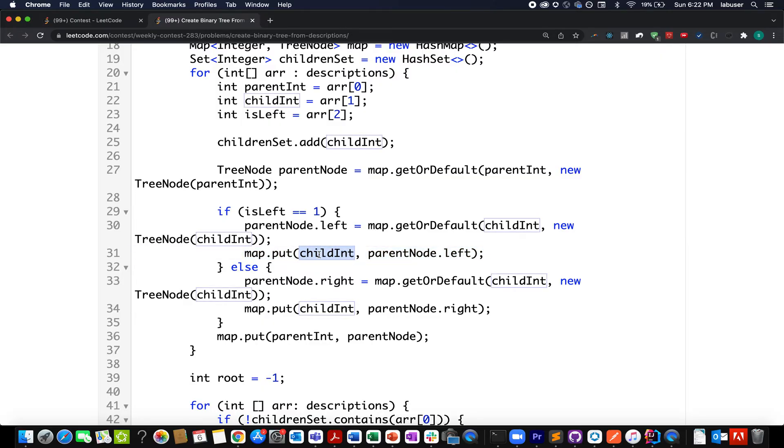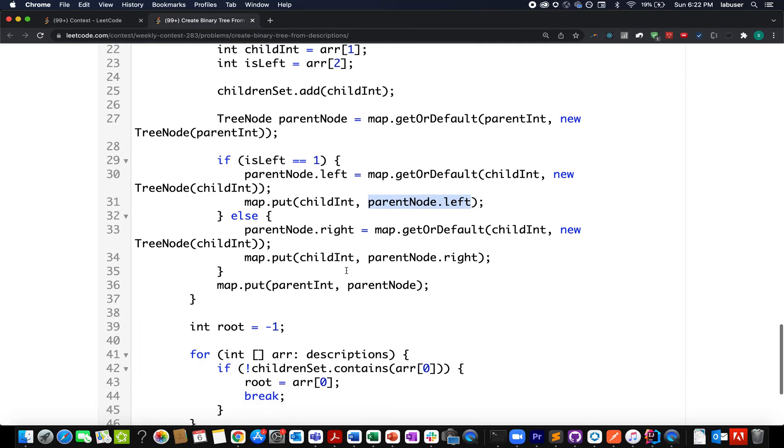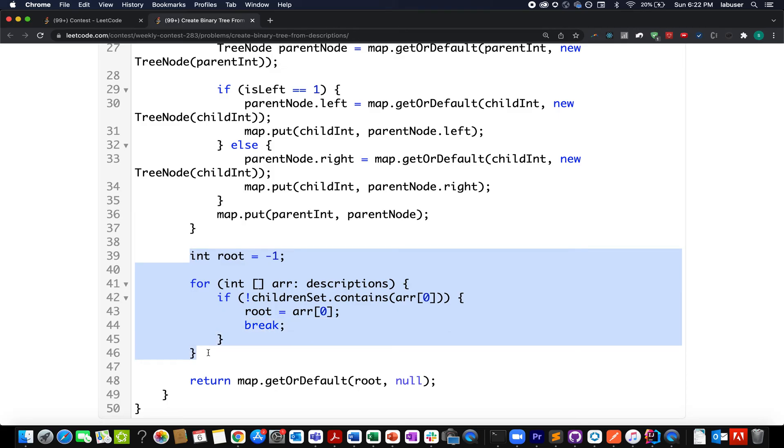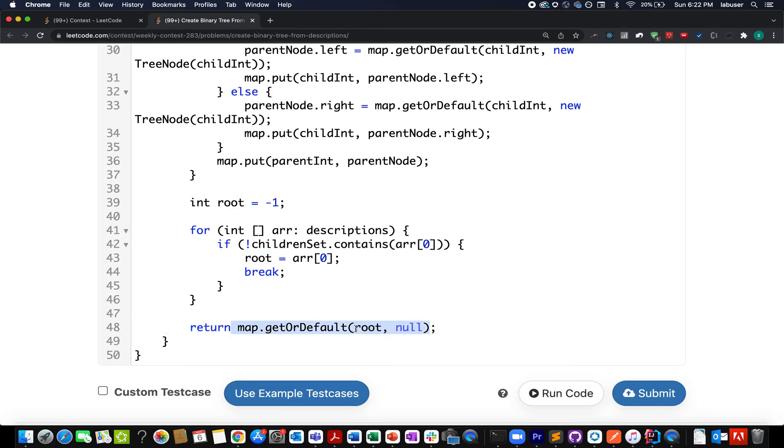This is important: child int comma parent node dot left. Else I go and create the parent's node right on very similar lines. Once I am done with this, I push or put a parent int comma parent node back into my map. This logic corresponds to finding out the root of the binary tree that we have built in the upward iteration. By default let's initialize root to minus one. As I start the iteration over the description array, I check if my current value is not present in my child set, I break it up, and I simply return the corresponding node with the root that has been identified here.